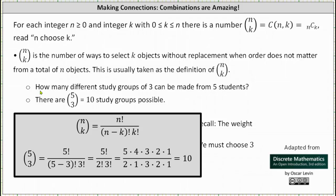As an example, how many different study groups of three can be made from five students? There are five choose three, which is equal to ten study groups possible.